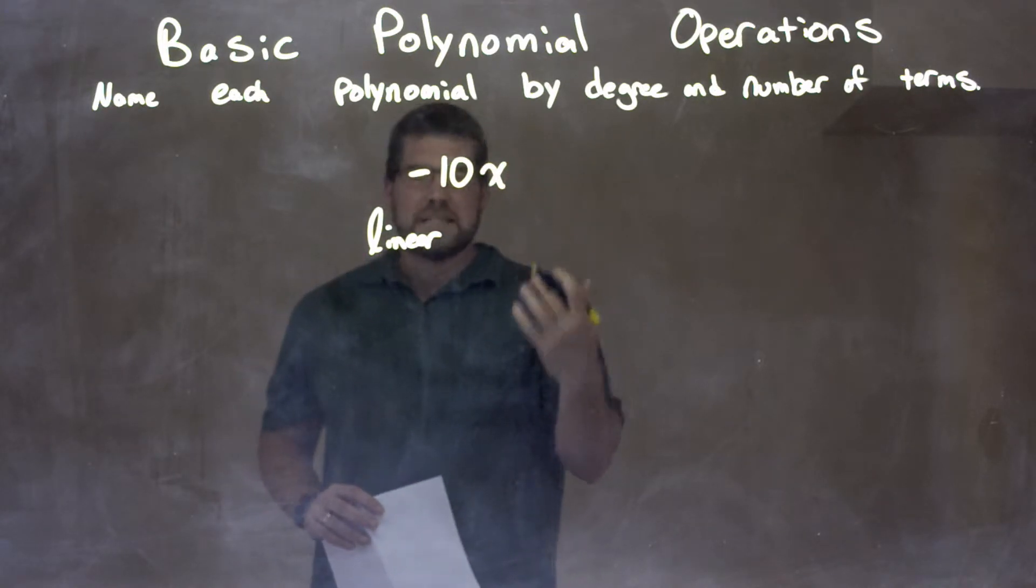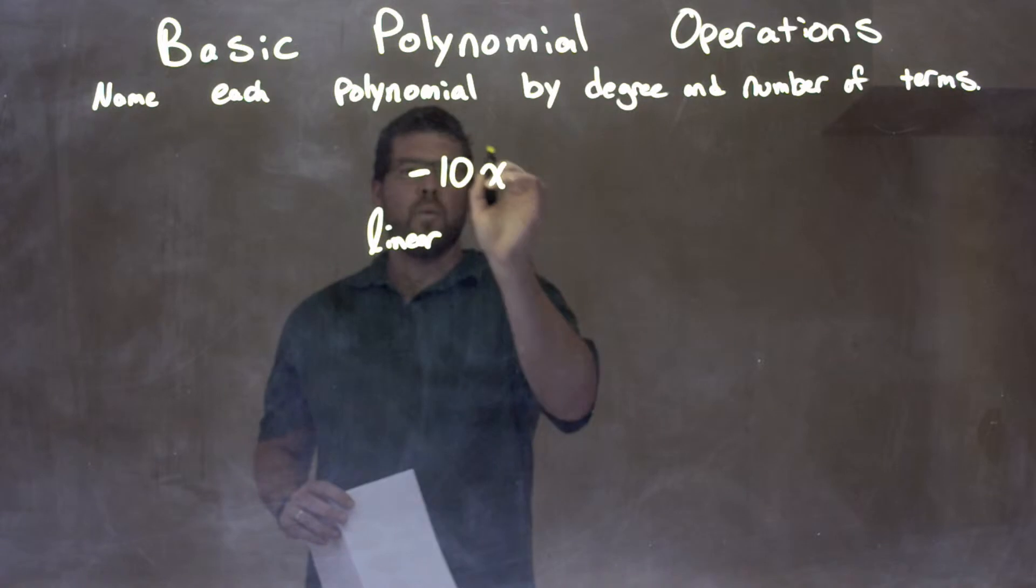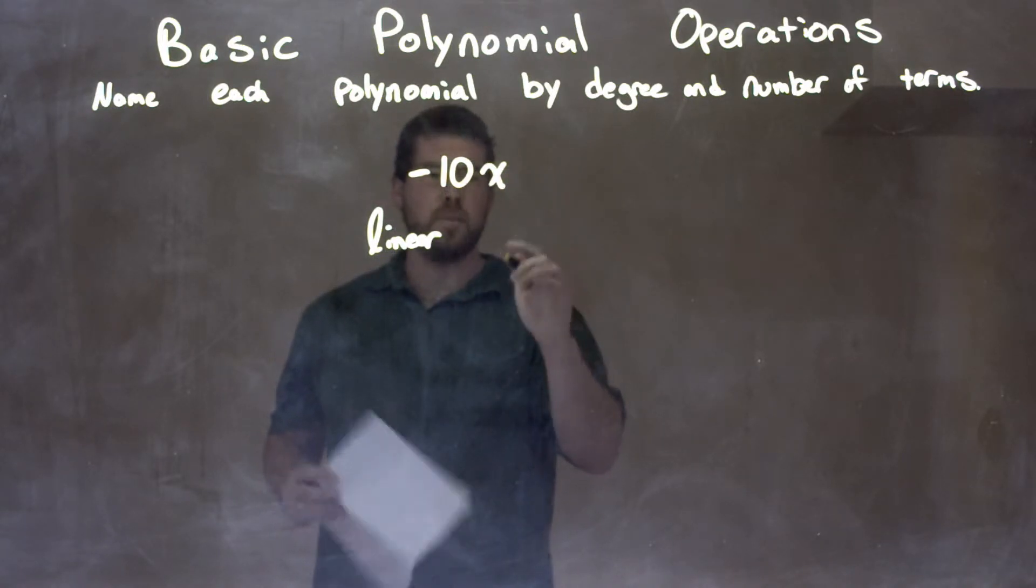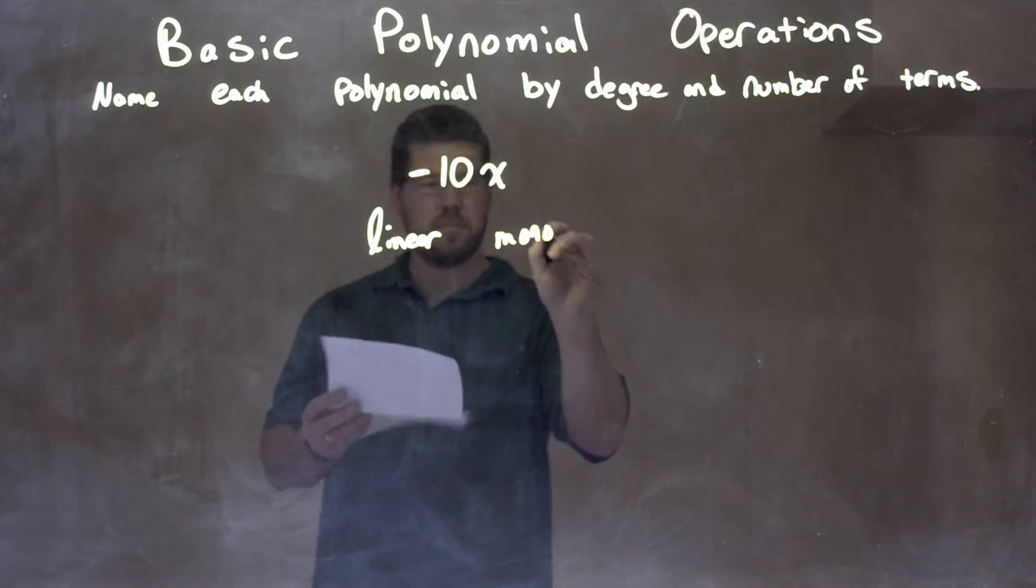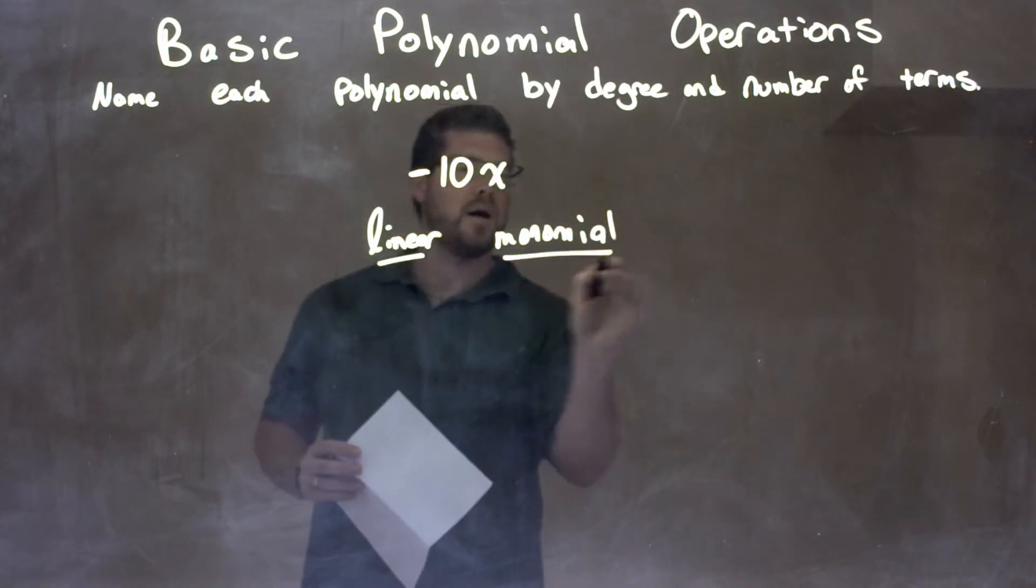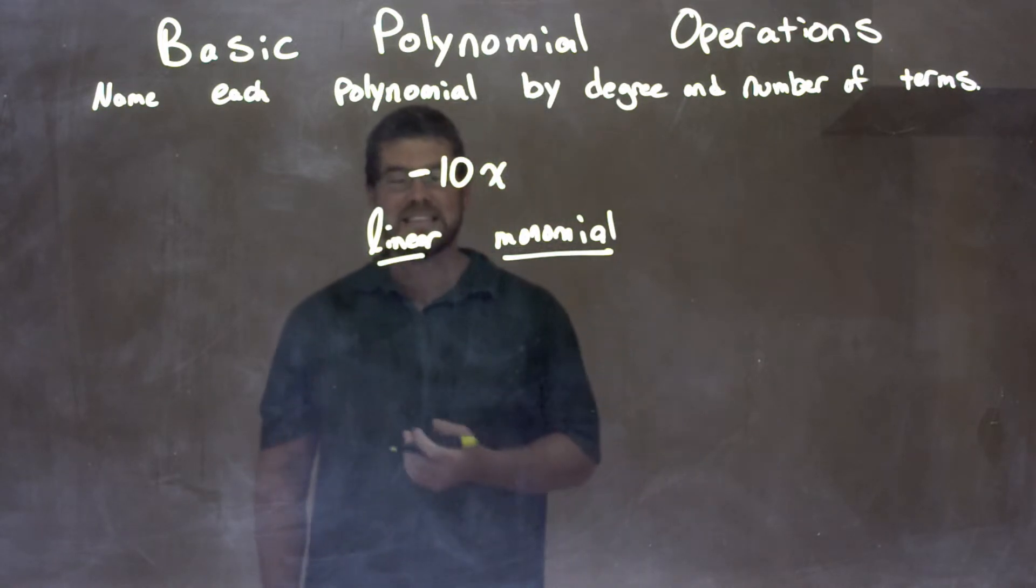Now, what type of polynomial is it? Well, there's only one section here, one section, so it's a monomial. So we have a linear monomial, and that's basically it.